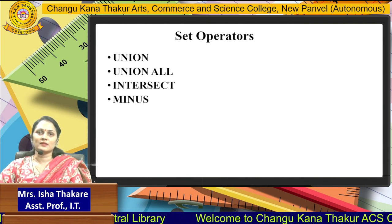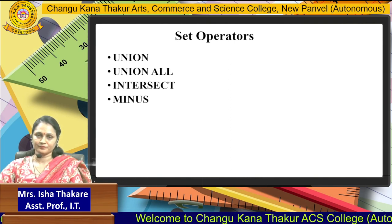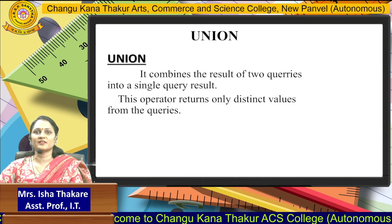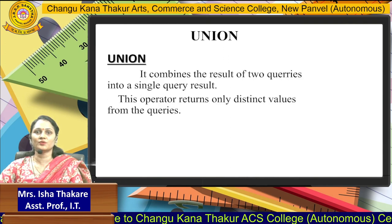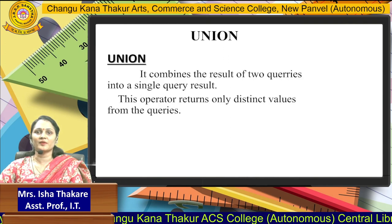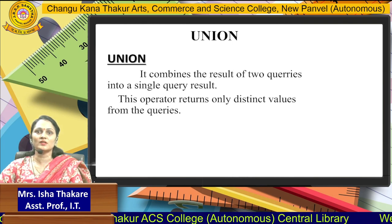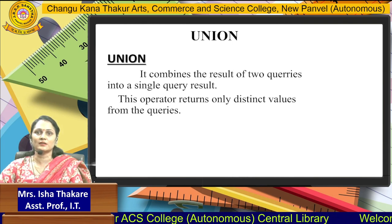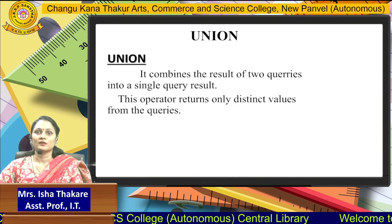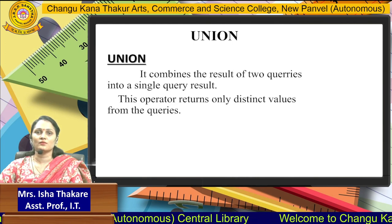Let's see all these operators in detail. The first operator is the Union operator. The Union operator combines the result of two queries into a single query result. This operator returns only distinct values from the queries.